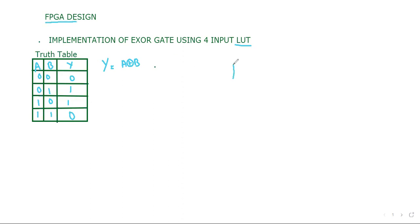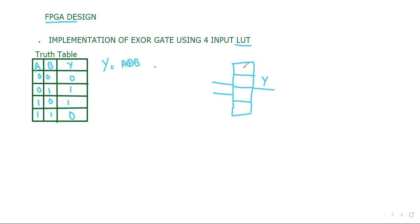A four input LUT will have four memory cells, or storage cells. Just like the multiplexer, two selection lines will be there and one output line. Here we are going to implement the XOR gate. We know the truth table of XOR gate: 0,0→0; 0,1→1; 1,0→1; 1,1→0. So this output will be written inside this table and the inputs will act as selection lines, that is A and B.